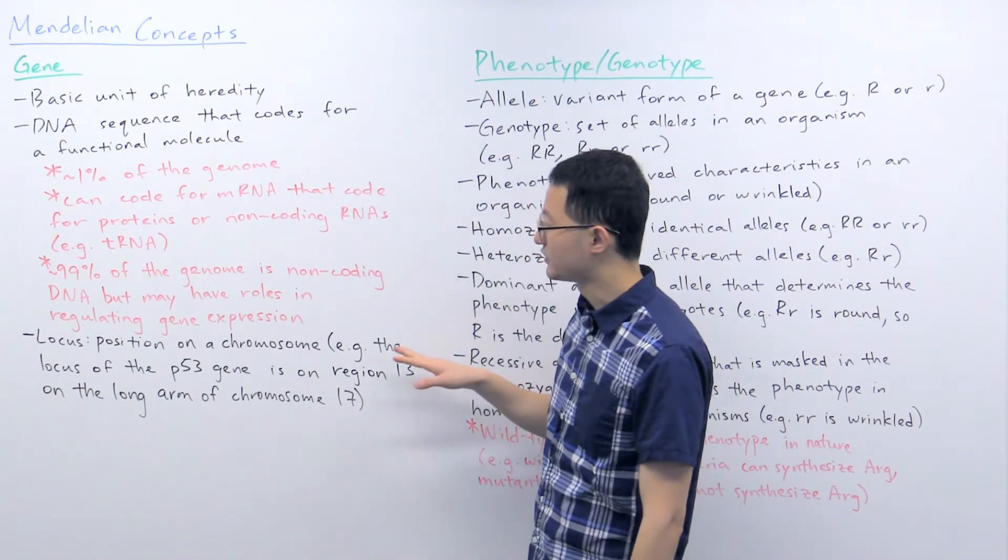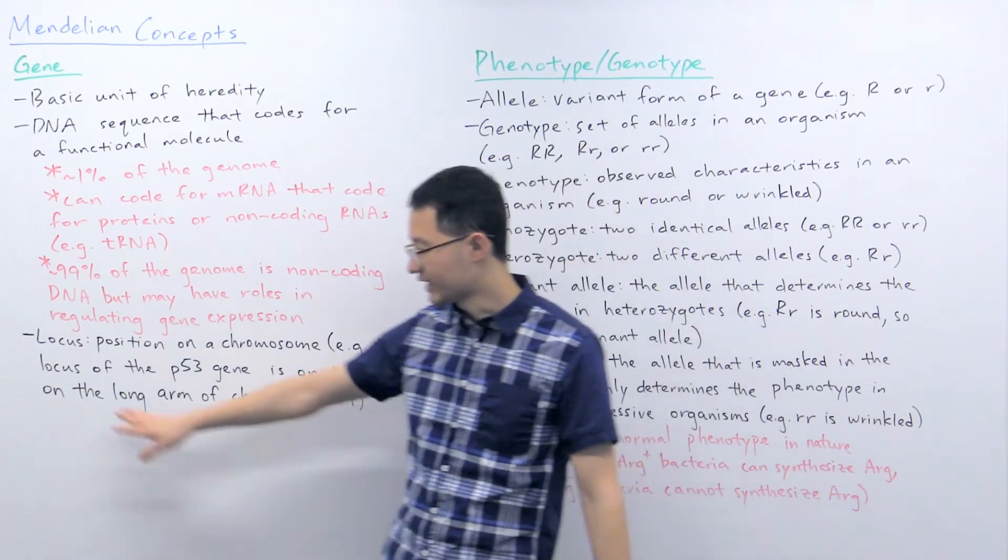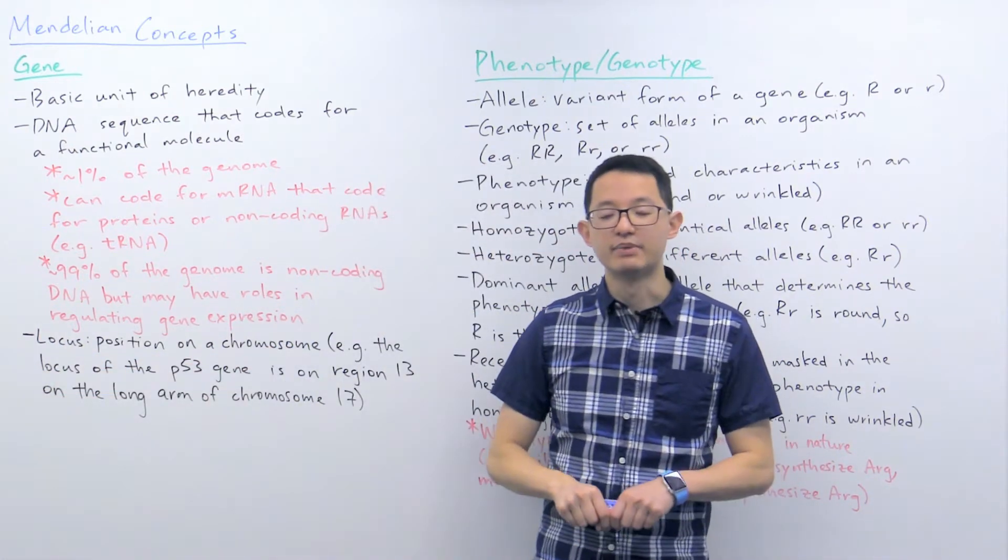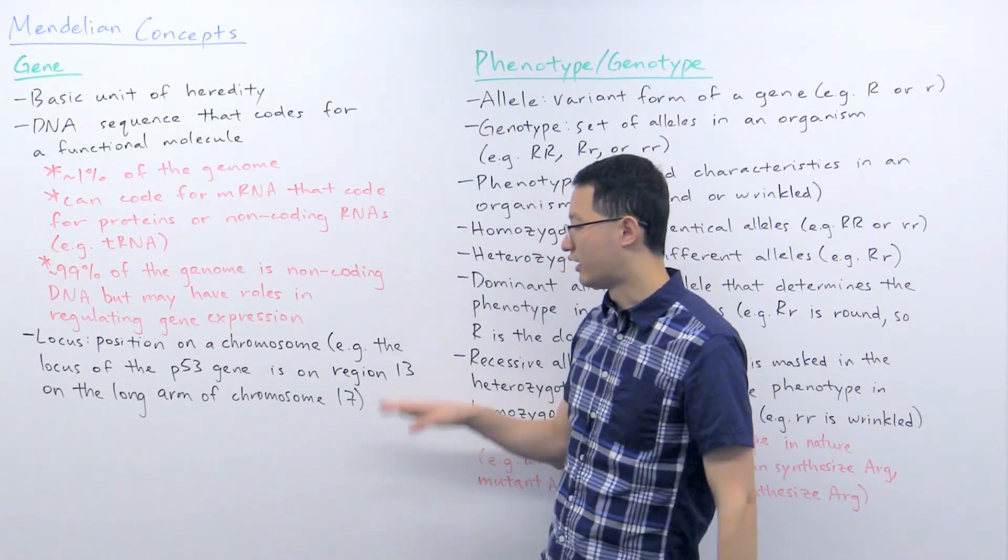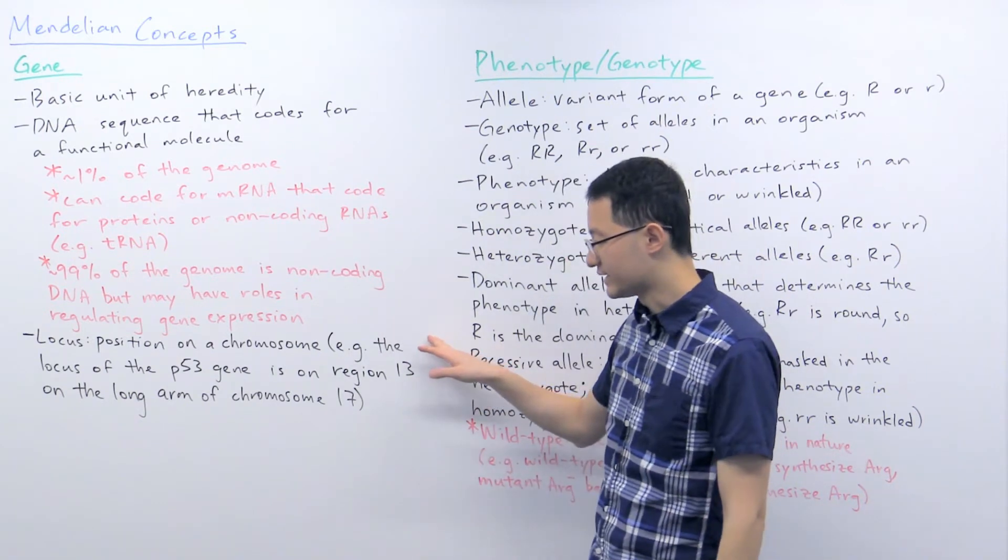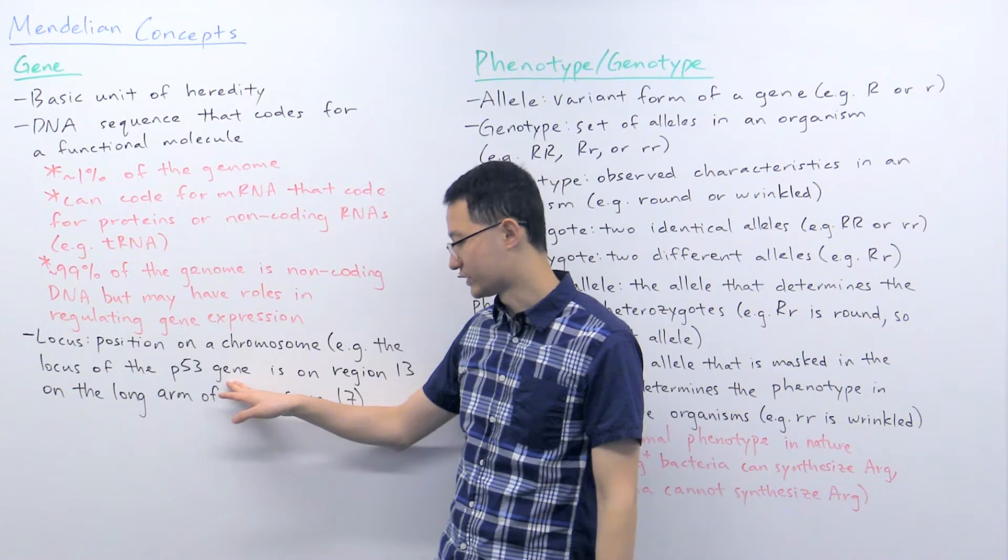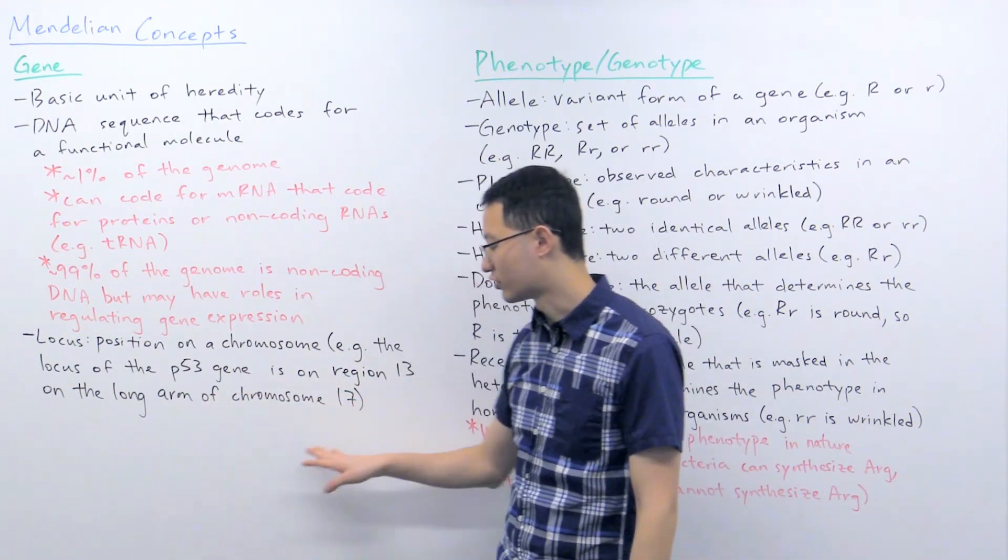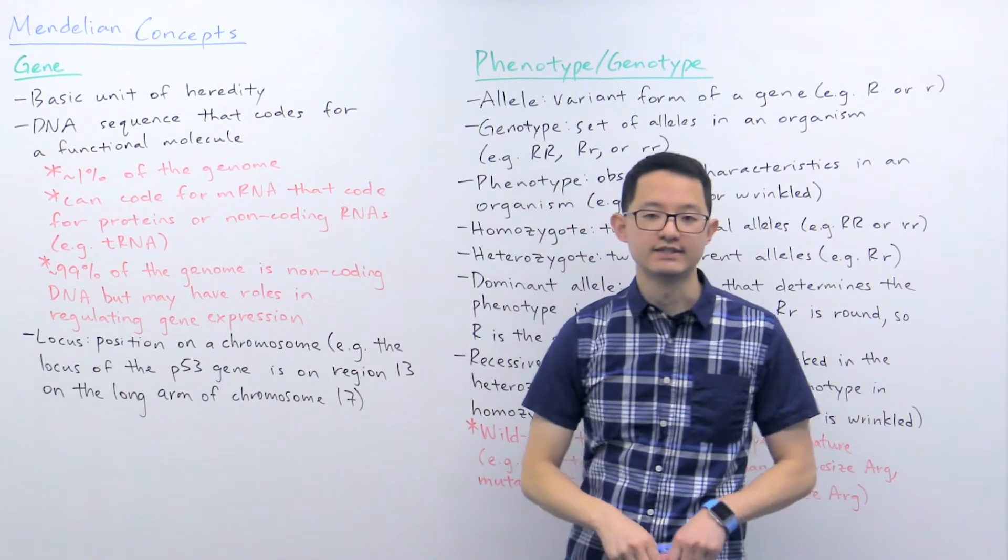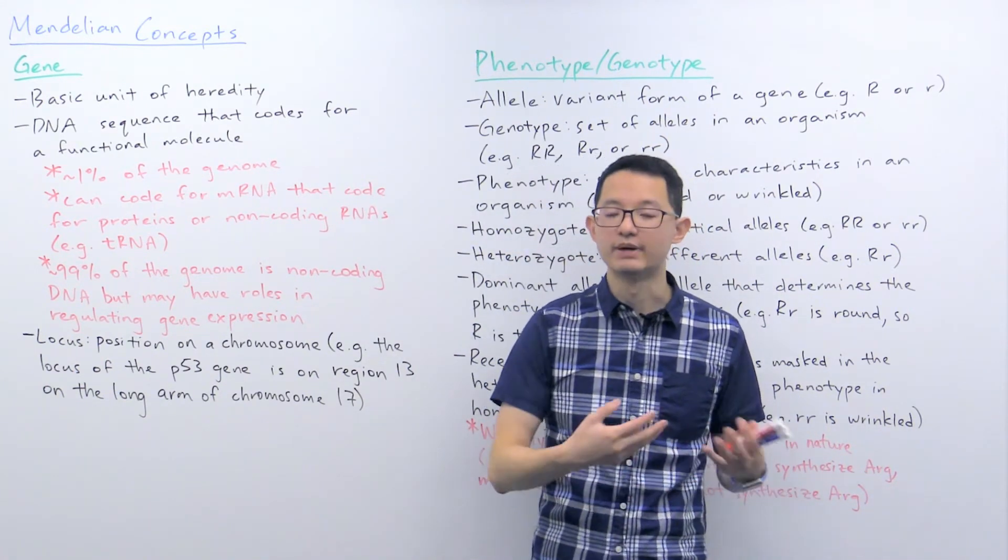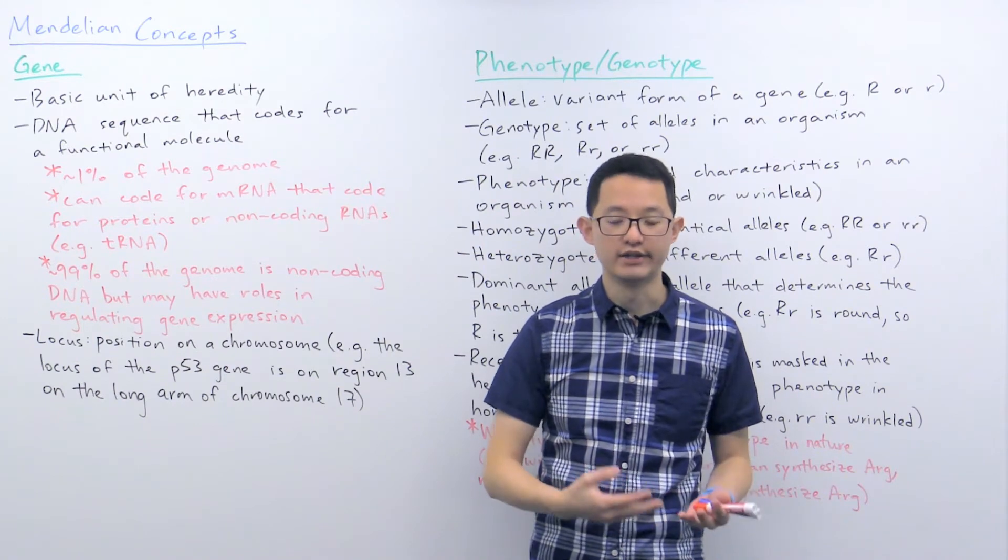So on the topic of genes, you'll occasionally see this term locus. Locus is referring to the position of a gene on a chromosome. So for example, the locus of the p53 gene is on region 13 on the long arm of chromosome 17. So essentially, you can think of the locus as the address or position of a gene on a chromosome.